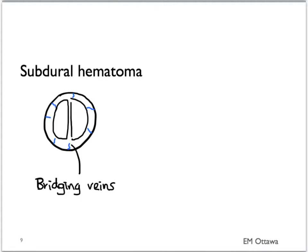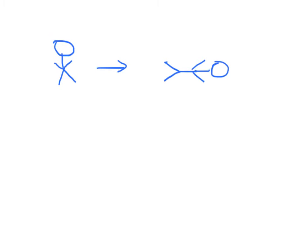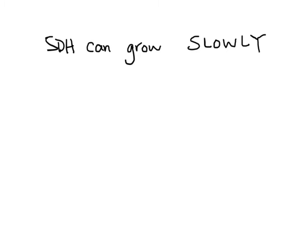Subdural hematomas are bleeding from bridging veins in the dura. When there is rapid acceleration-deceleration of the head, that can shear these veins, causing bleeding. Subdural hematomas can be caused by falls, but no direct head trauma is needed. Since the bleeding is venous, it is low pressure in nature, and therefore a subdural hematoma can grow slowly. Patients who are on anticoagulants will be more susceptible to developing subdural hematomas.